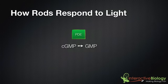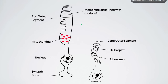Now let's put this in perspective. We're inside the rods — here's a picture of a rod and a cone, but we'll focus on the rod as our model. Normally, with no light and no stimulation, cyclic GMP is available. Cyclic GMP opens cyclic GMP-gated sodium channels — not voltage-gated, but cyclic GMP-gated. In the dark, these channels are open and sodium rushes into the cell, making the membrane potential more positive.